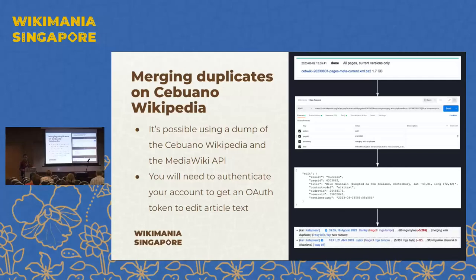This took a few minutes, and I could probably have done it manually in the same time, but it just means it is possible to programmatically write code to more rapidly identify the duplicates and merge them into what you identify as the main article. There are still issues with coordinates on the Cebuano Wikipedia because they are from GeoNames, and you could potentially fix those programmatically too using the article dump. The point is just to show that it is possible to — A: identify the duplicates, and B: clean them up in Wikidata and Wikipedia.